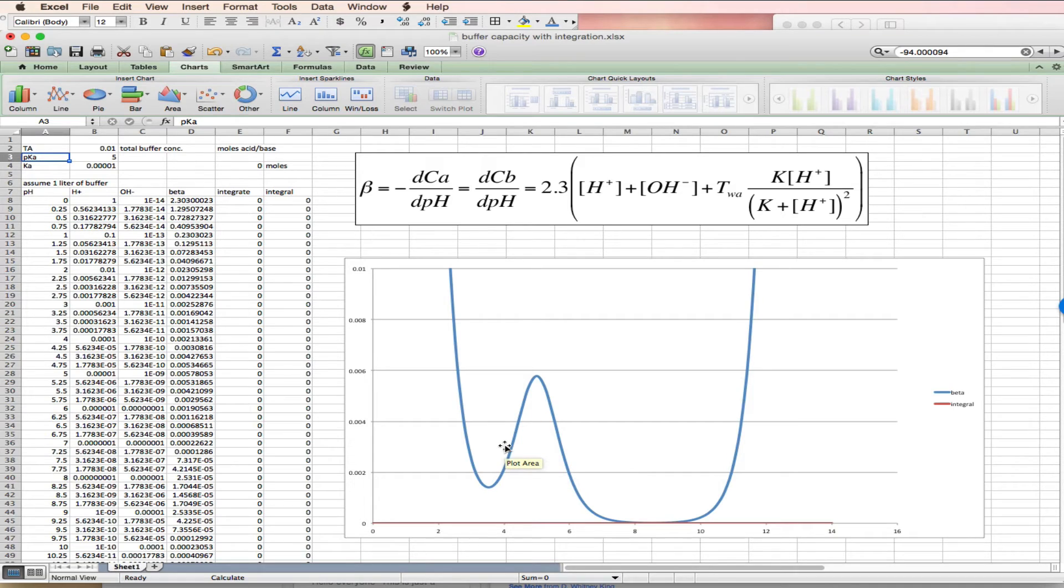Conversely, if I was doing a reaction which was producing base, I might want to pick a pKa slightly more positive than my experimental pH because I'd have to climb up and over this curve to change the base.